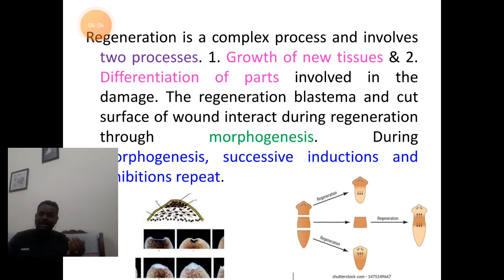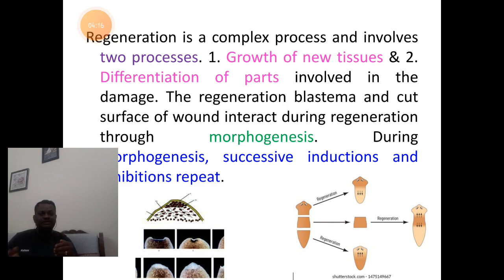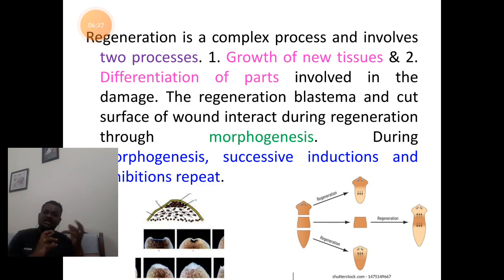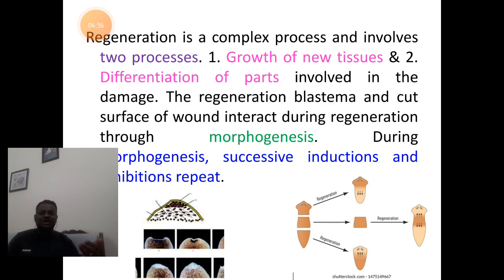With the help of blastema formation, there occurs the process of morphogenesis. We have understood in the previous session that the first stage is wound healing, the second stage is blastema differentiating to form morphogenesis, which further involves the development of regeneration of the lost part.